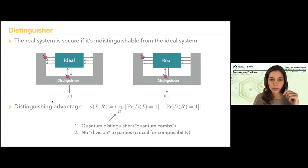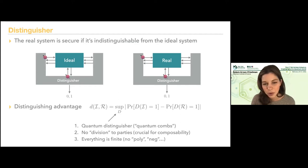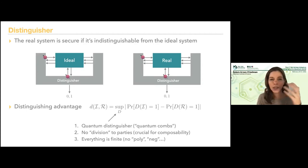Another important note: everything is finite here. When talking about QKD and information security, I have a finite number of rounds in my protocol — there is no 'poly', no 'negligible', nothing like that. Everything is finite in this case.